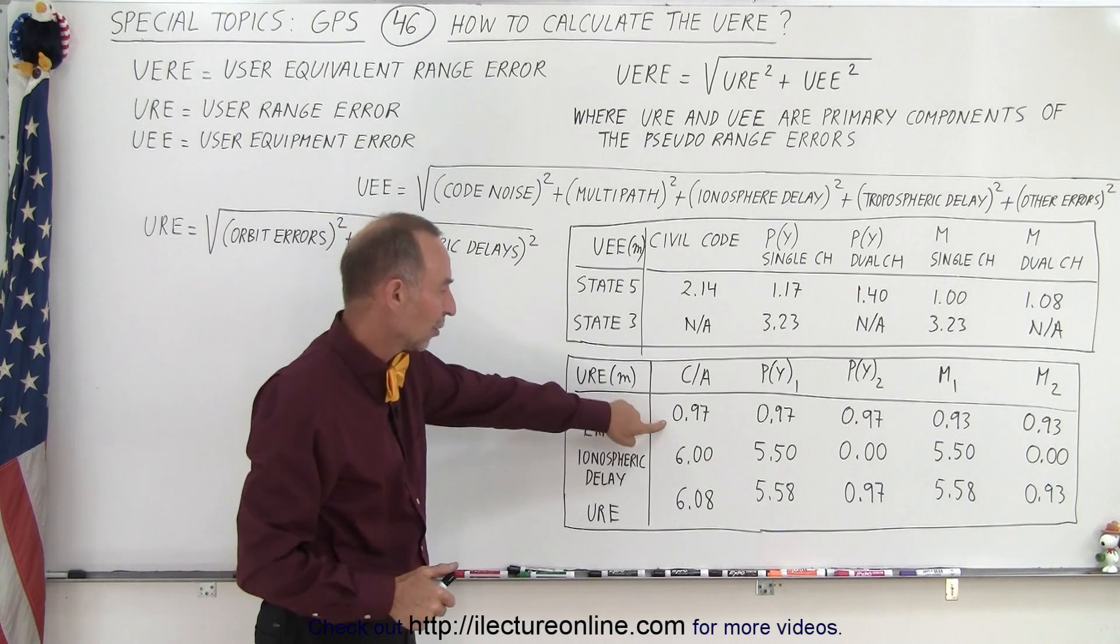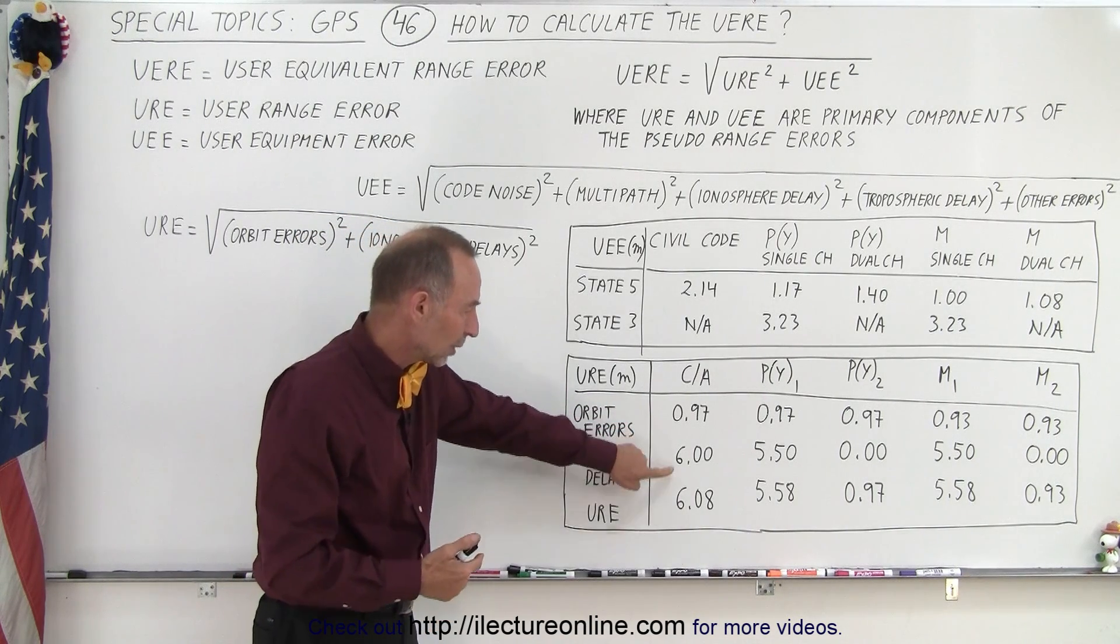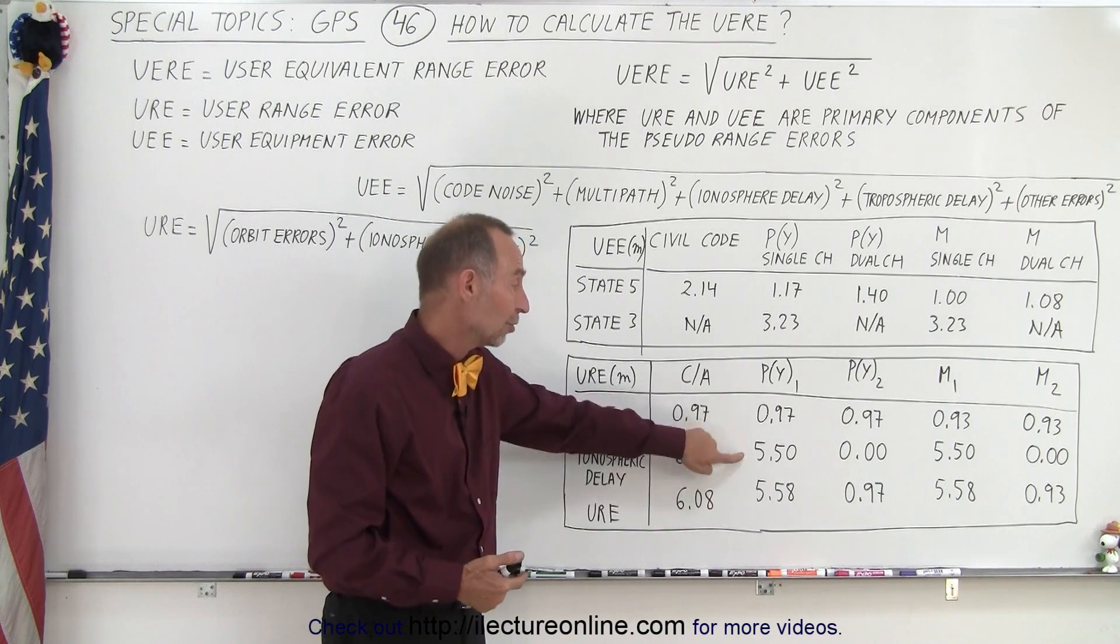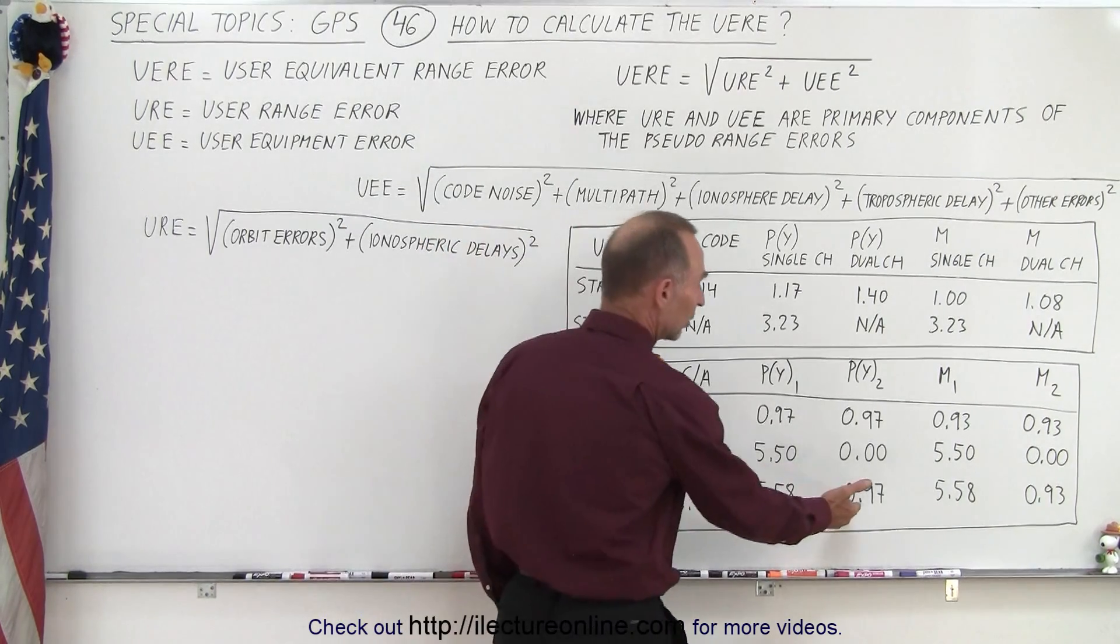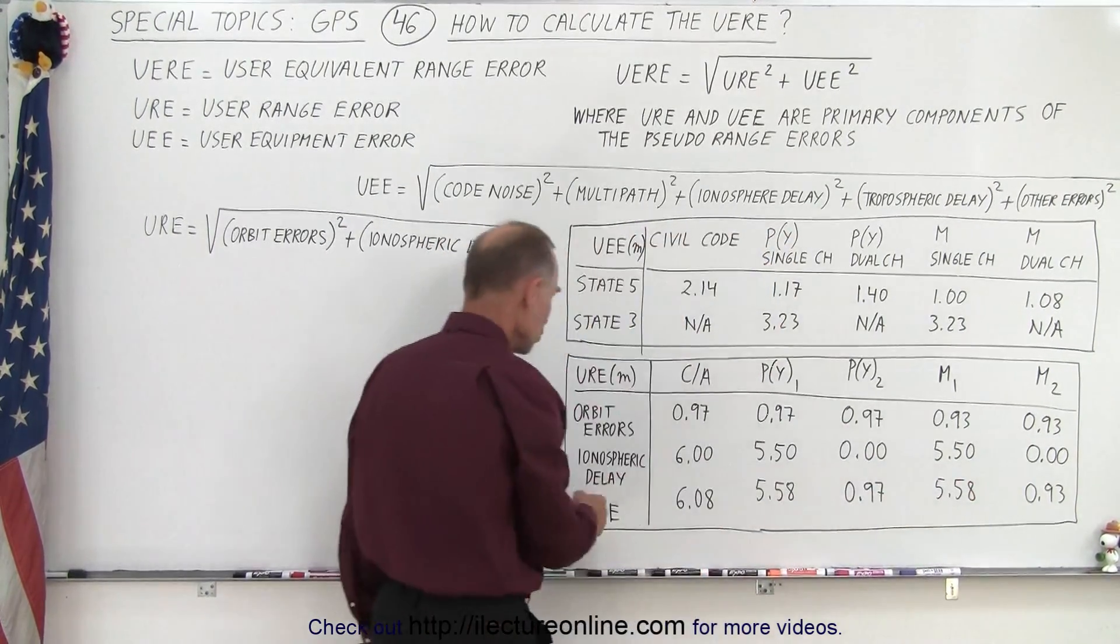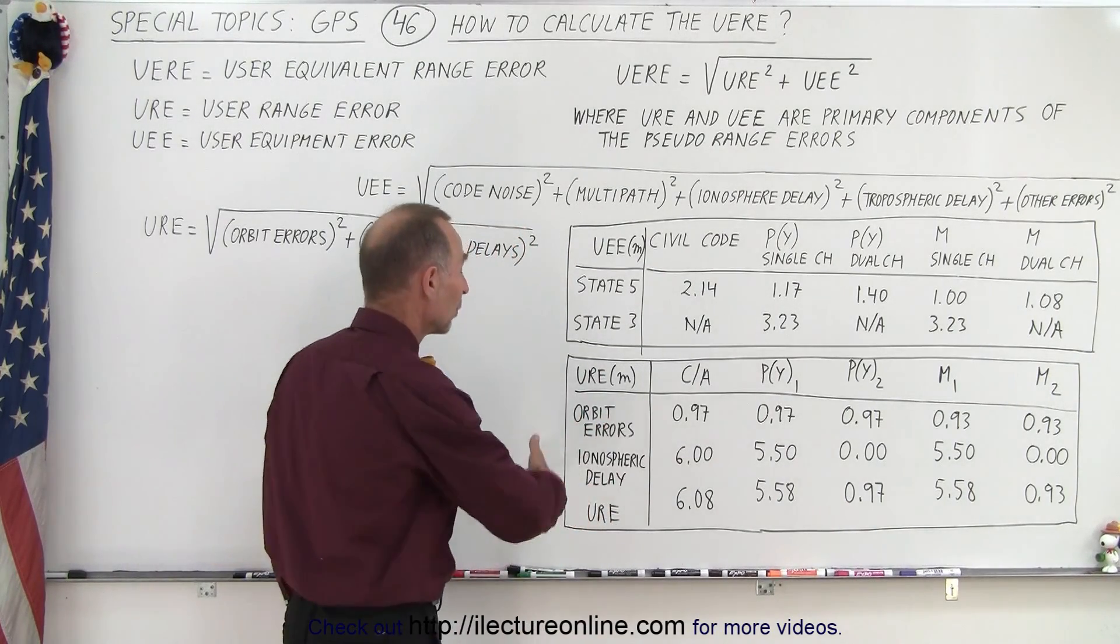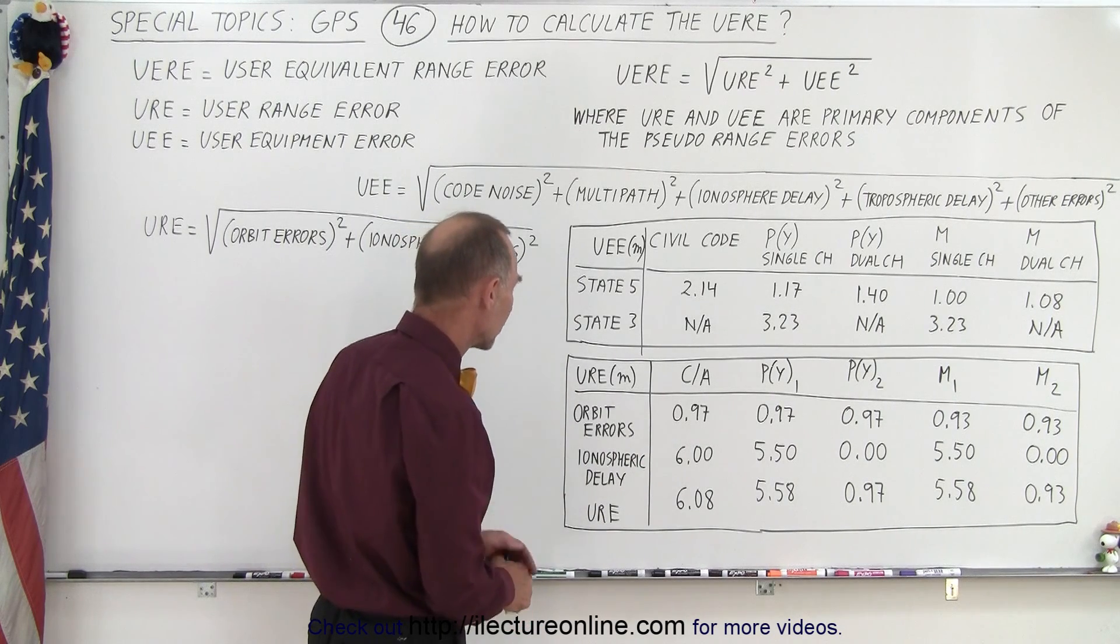Now again, when we take this number squared, add it to this number squared, and then we sum them together and take the square root, we get this number right here. So this is the square root of these two numbers squared and added together. And then notice, when we're on dual channel, the URE numbers are actually quite small. So that means we have gotten rid of most of the error caused by the URE.